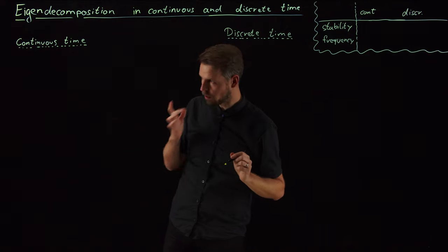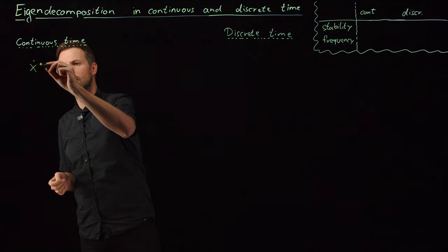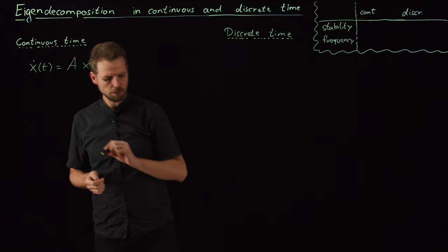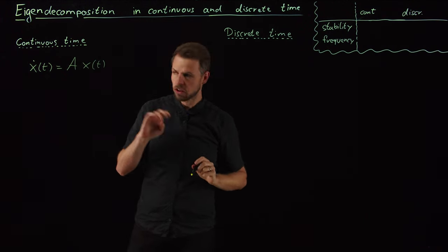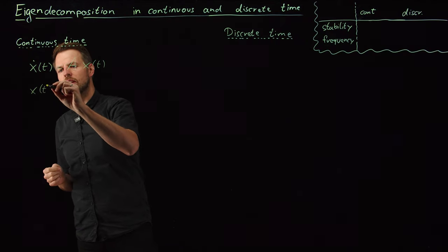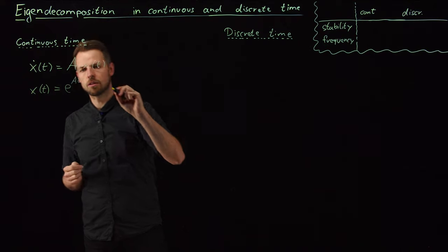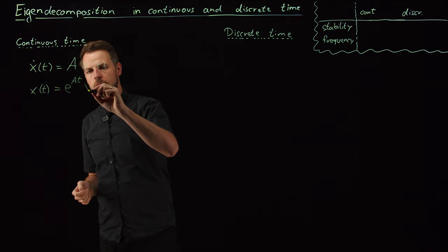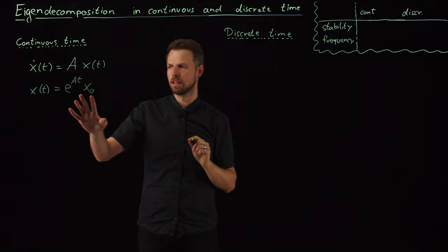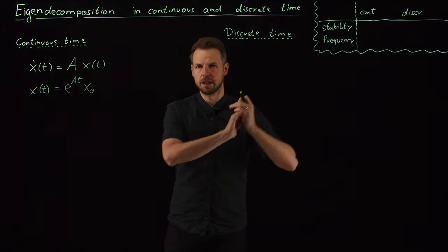Let's start with what we know already. We have seen before that our beloved continuous time system is x-dot equals A times x. Given some initial condition, the solution is simply given by the matrix exponential of A times t, multiplied from the right with our initial condition. So simply enough. And this is sort of a repetition now, but I'm going to use this to relate it to the discrete time case in a minute.